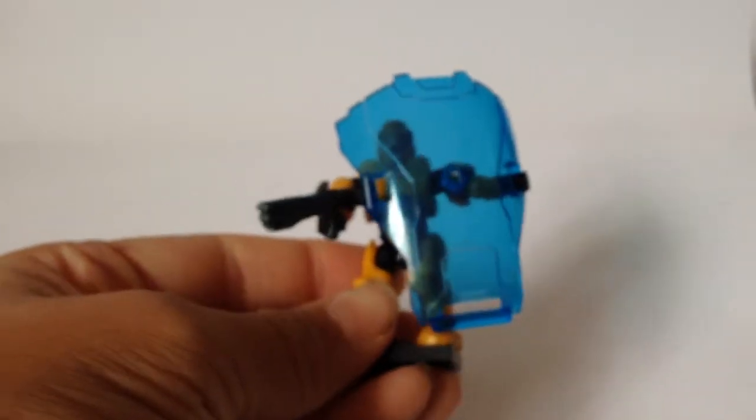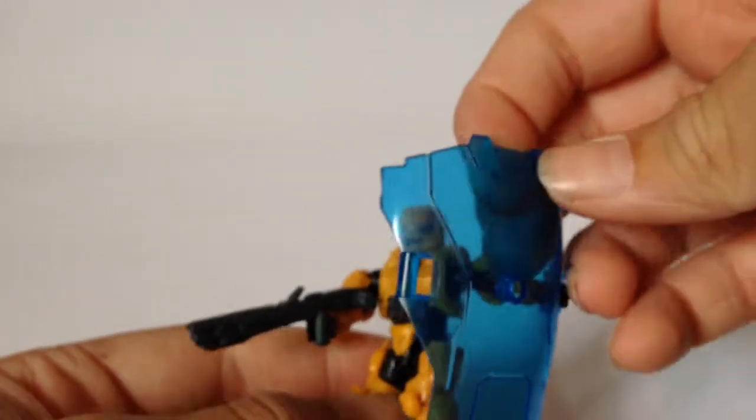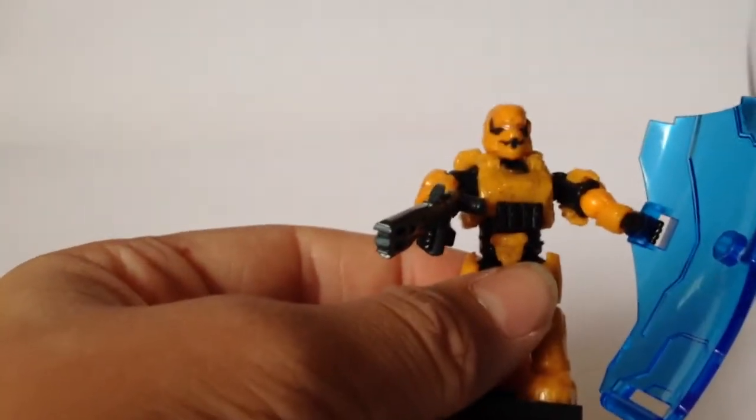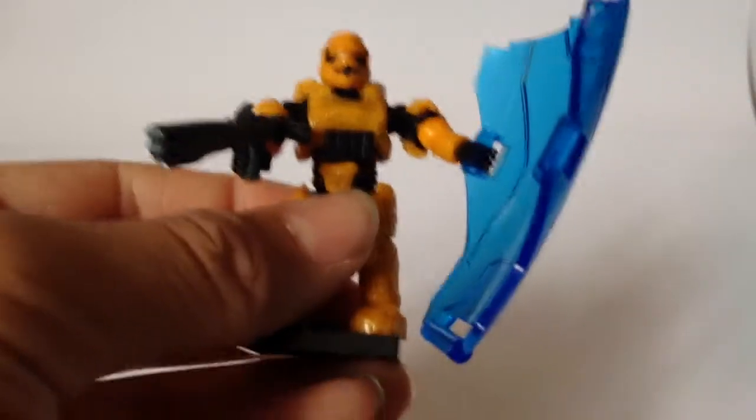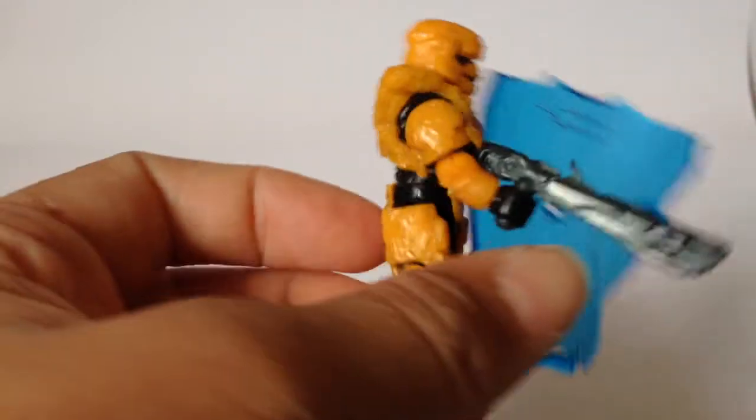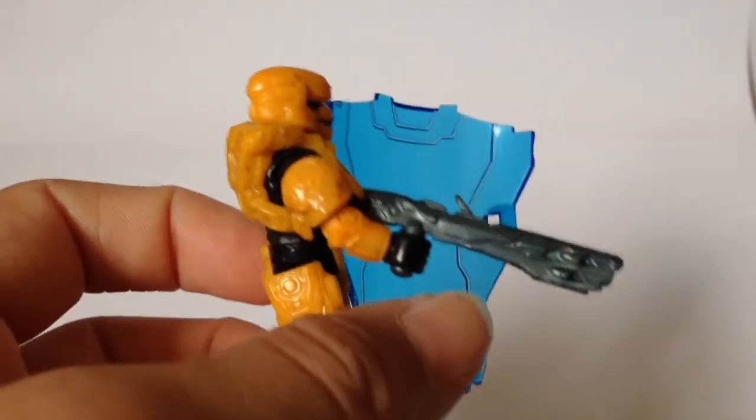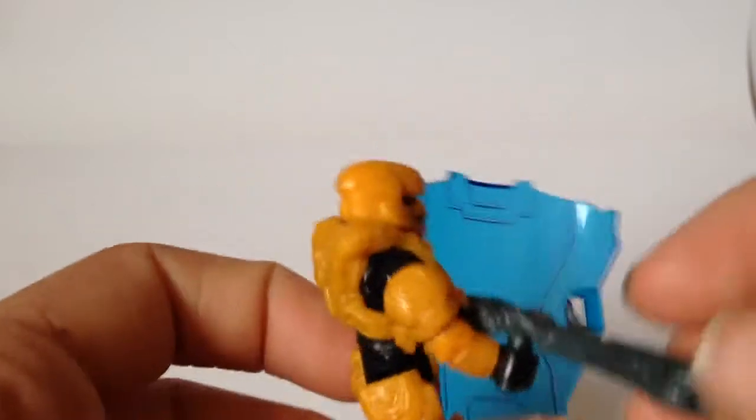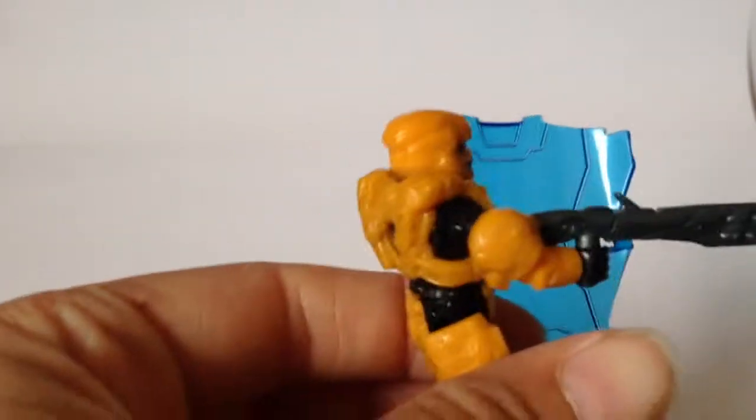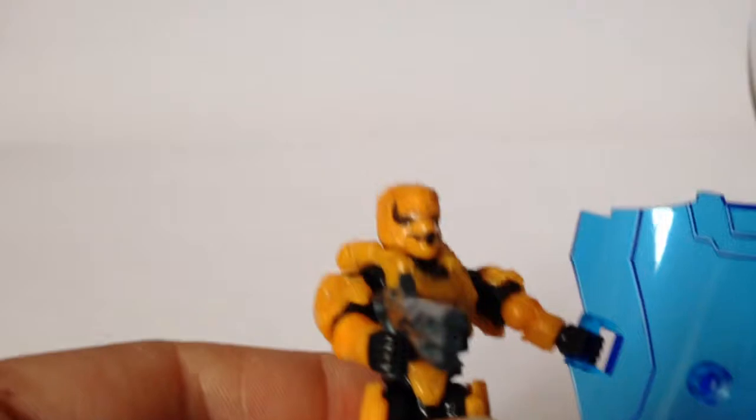Next is the Soldier. The Soldier comes with a hard light shield, which I shall show you all later when I show the special features about this set. He comes with a scatter shot, which is the Forerunner shotgun, which ricochets and normal soldier armor. Soldier armor is definitely one of my favorites now. I've never had a figure with soldier armor before and it's nice.